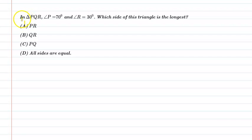Hello students, let us understand the following question. In triangle PQR, angle P is equal to 70 degrees and angle R is equal to 30 degrees. Which side of this triangle is the longest? There are four options given, and we have to find the correct answer.